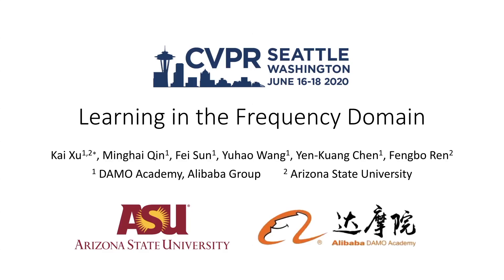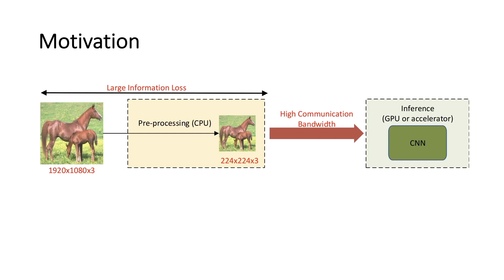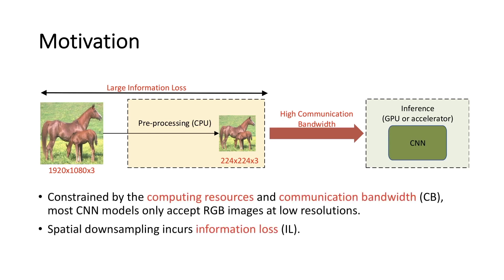In this work, we introduce a methodology for learning in the frequency domain. The motivation of our work is that most scene models only accept RGB images at low resolutions given the computation constraint. Meanwhile, the spatial down-sampling operation incurs substantial information loss.